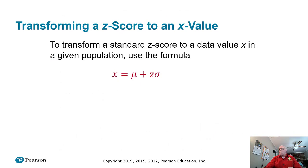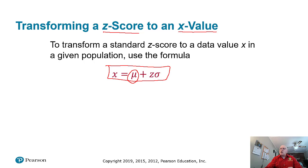Now, how could we go from a z-score to an x-value? To get the x-value, you need to know the mean of your particular distribution, the standard deviation, and you already have the z-score. Just put those into the formula X = mean + Z × standard deviation and do a simple calculation.